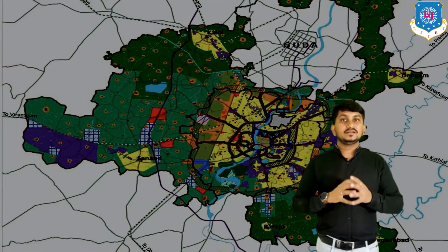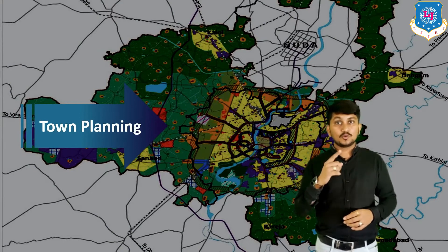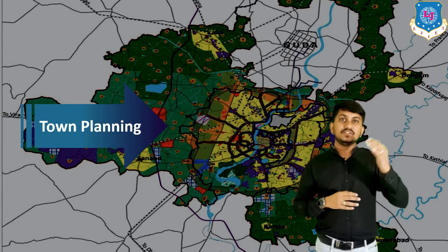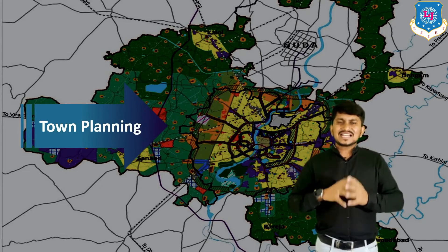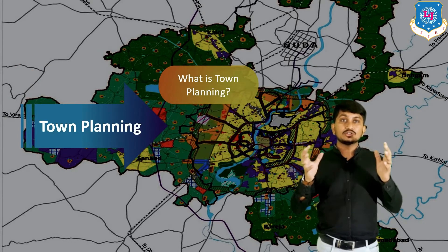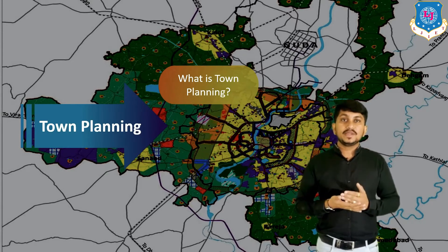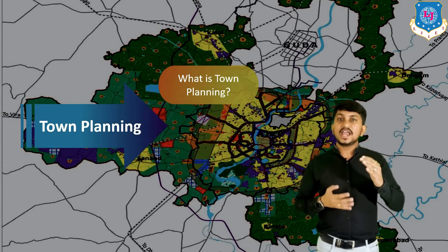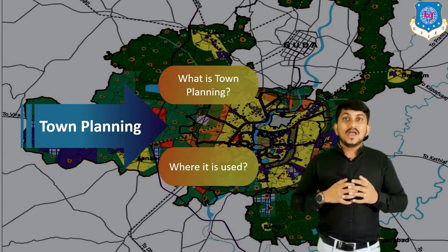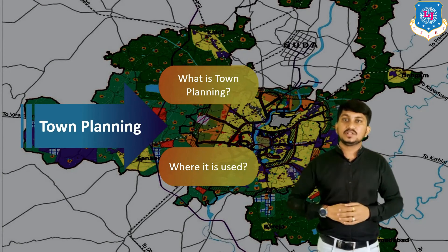Now let's discuss town planning. A town is a human settlement larger than a village but smaller than a city. Town planning is an art of shaping and guiding the physical growth of a town by creating buildings and environments to meet the social, cultural, economic, and recreational needs of both rich and poor people. The four objectives of town planning are beauty, convenience, environment, and health.